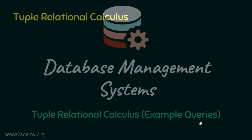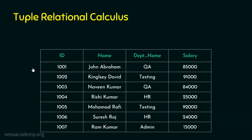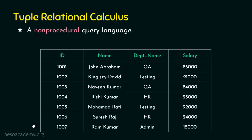With that knowledge we are stepping into example queries. Let's take an example table — the instructor table — which contains id, name, department name, and salary: only four columns. Tuple relational calculus retrieves tuple by tuple, where a tuple is a row. If we retrieve all rows and all columns, we go through the first tuple, then the second, then the third, and so on. This is a non-procedural language where we say what is required, not how it is retrieved.